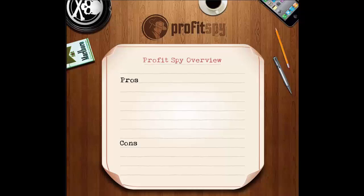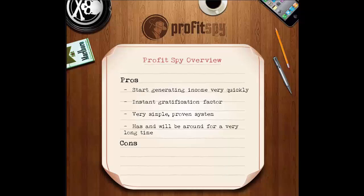For anyone who has ever attempted product arbitrage, you'll realize that it is one of the very few money-making methods that you can implement today and start generating income for yourself tomorrow. There aren't too many other methods out there that can give you that sense of instant gratification, as most involve waiting 30 to 60 days for commission payments to clear or your marketing efforts to show any sign of positive ROI.